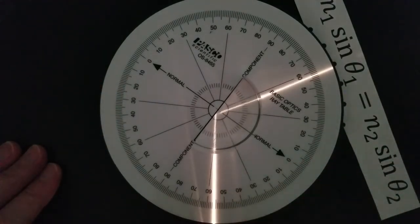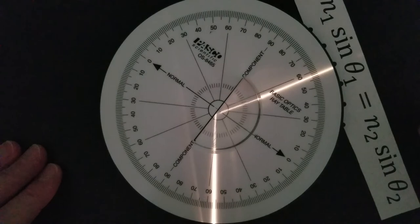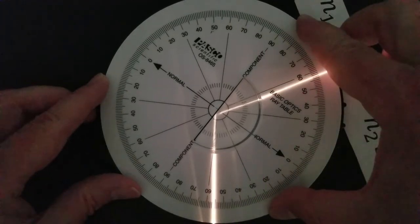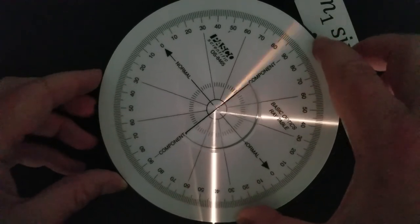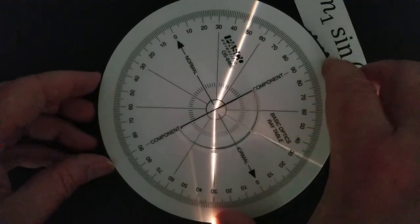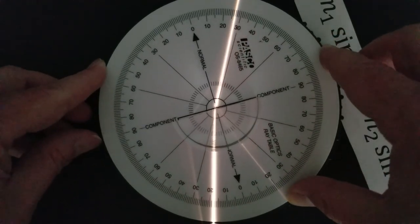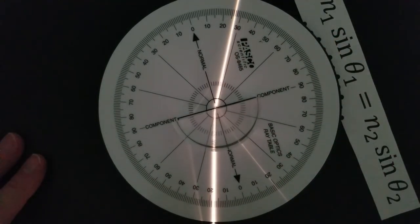We know air is one and then the angle is this angle over here. The index of refraction of our solid, we do not know. The angle inside the solid would be this angle here on this side. Take the measurements that we did and determine what the index of refraction of our solid is. And then also determine what the critical angle is. That critical angle helps determine total internal reflection. And that's how fiber optic cables work.